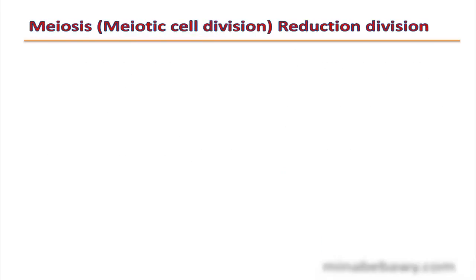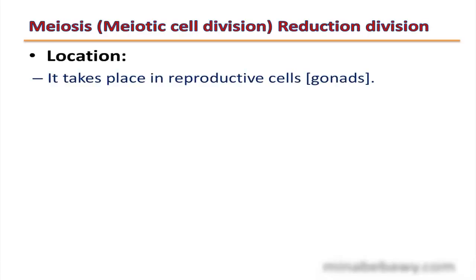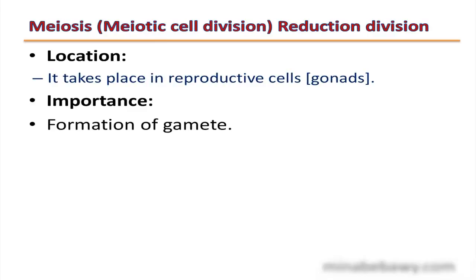The second type of cell division is meiosis, or meiotic cell division, also called reduction division. It takes place in reproductive cells, or gonads. The importance of meiosis is that it is essential in the formation of gametes.